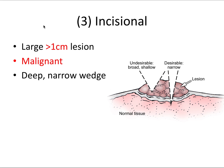Our third biopsy technique is the incisional biopsy. This is a technique used when a lesion is large, particularly greater than one centimeter in diameter, and you're suspicious that it might be a malignancy. It's also generally used in anatomic areas with high morbidity, like the floor of the mouth. This technique samples a particular part of a lesion — you cut in a wedge fashion, typically sampling from the edge of the lesion, and the margins should extend into normal tissue. A narrow and deep wedge is much preferable to a broad and shallow wedge.